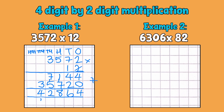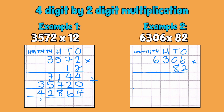Our second example is going to involve doing exactly the same thing. We set it up the same way with our hundreds, tens, ones, thousands, ten thousands and hundred thousands. I'm going to write my number in: 6,306 multiplied by 82. Some slightly larger numbers this time, but we go ahead and do just the same thing, setting it all up with that multiplying by 10 placeholder in there.